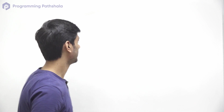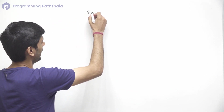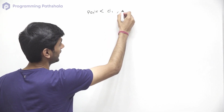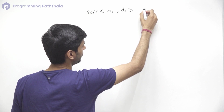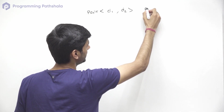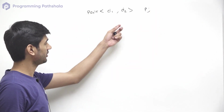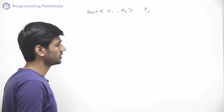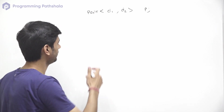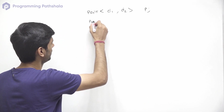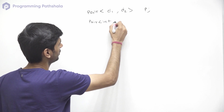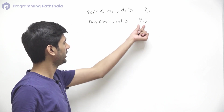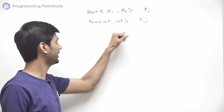To declare a pair we use the keyword 'pair', then provide the data type of the first object and the data type of the second object, followed by the name of that pair — let's say P. This declares a pair holding objects with data types D1 and D2. For example, if we want a pair of two integers we can use int, int — so this P1 pair can hold two integers.